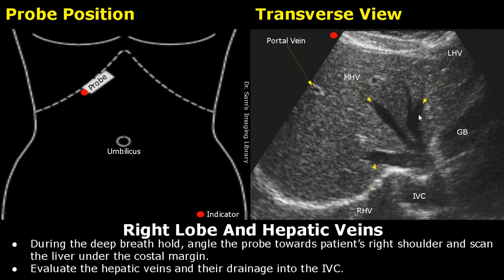This is the left hepatic vein — it will always be in the right half of the image. This is the middle hepatic vein. And this is the right hepatic vein — it will always be in the left half of the image. All three veins are draining into the IVC. These are the portal veins with hyperechoic borders. The gallbladder is seen here.